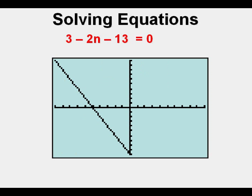We graph by pressing graph or zoom 6 if we want to get a standard window. We see the x-intercept here. If we count from the origin, it looks like the answer is x, or in this case, n equals negative 5.